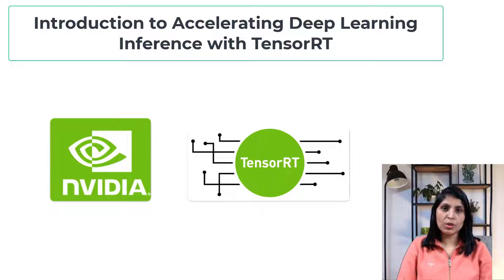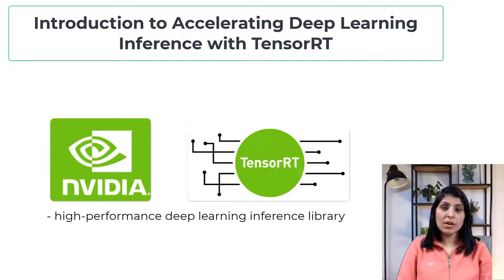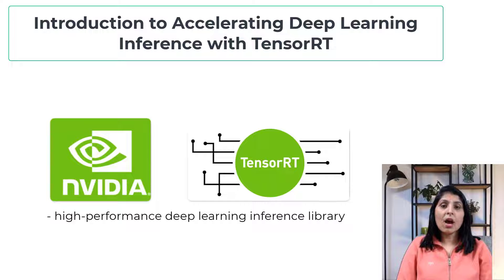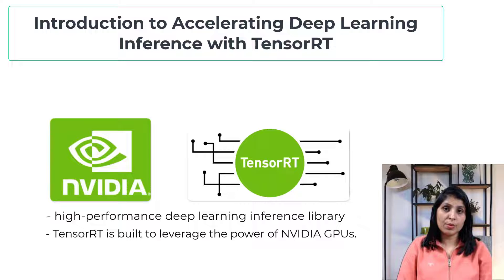So what is TensorRT? TensorRT is a high-performance deep learning inference library developed by NVIDIA, and it is specially designed for real-time applications. Real-time applications are those that require immediate processing and response to input data, such as object detection. TensorRT is built to take advantage of the power of NVIDIA's GPU and is built on CUDA, which is NVIDIA's parallel programming model.